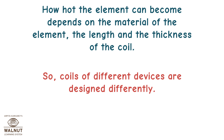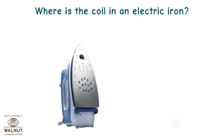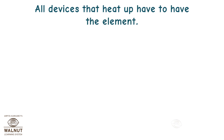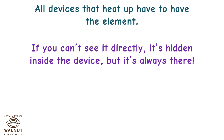So, coils of different devices are designed differently. Where is the coil in an electric iron? It is hidden behind the panel. All devices that heat up have to have the element. If you can't see it directly, it's hidden inside the device. But it's always there.